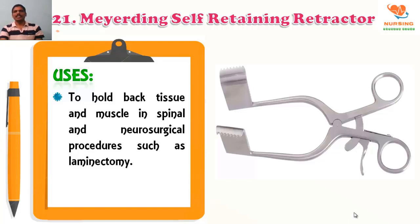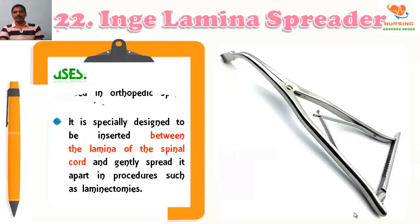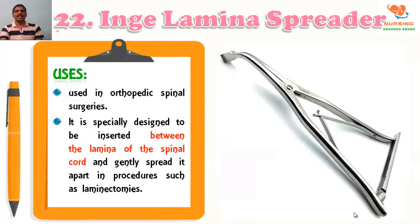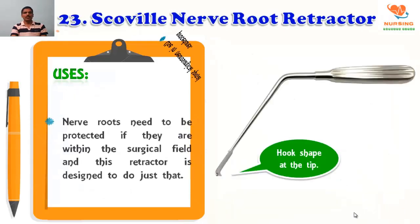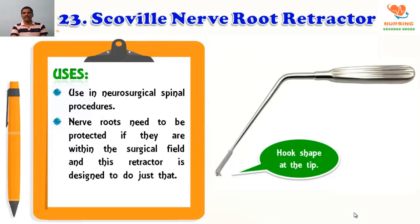Lamina spreader is used in orthopedic spinal surgery; it can be placed between the laminae of the spinal cord. Nerve root retractor is used in neurosurgical and spinal procedures where the nerve roots need to be protected if they are within the surgical field. The retractor is designed to do this work. The hook-shaped tip you can see.